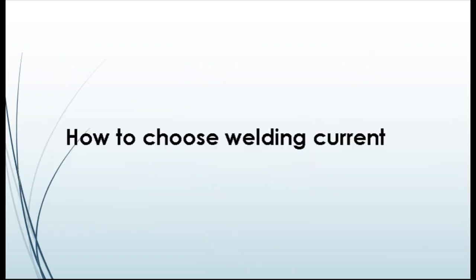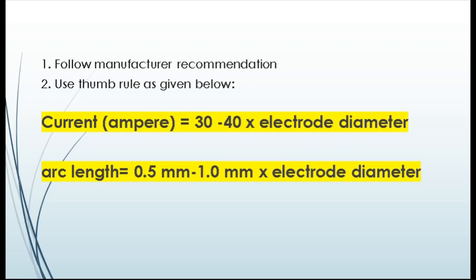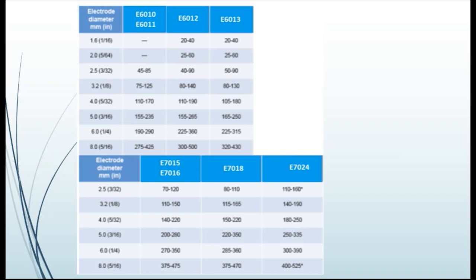Let's see how to choose the welding current. We can choose current based on the manufacturer's recommendation or follow this thumb rule: to get a current for a given electrode diameter, multiply the diameter by 30 or 40. The obtained values can be used as the lower and upper range for that diameter. Another thumb rule shown is for finding the arc length. A table shows the range of current for various important welding electrodes that can be used as reference.